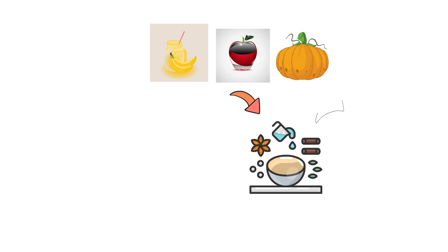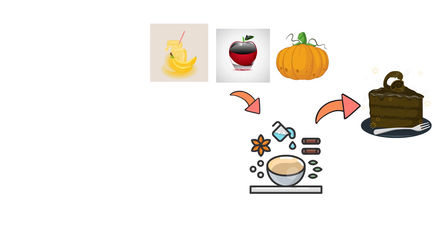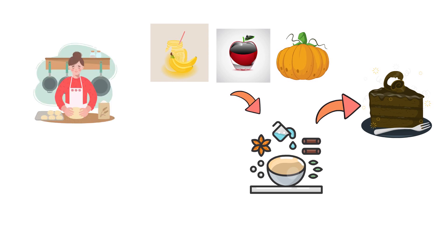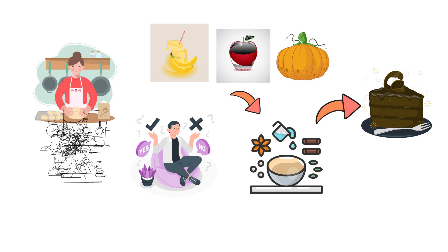Even fruit purees like banana, apple, or pumpkin can act as splendid replacements for certain ingredients, adding a natural sweetness and moisture to baked goods. As budding bakers, understanding these alternatives and experimenting with them is not just a necessity, but an adventure.